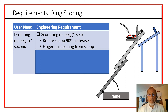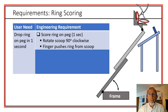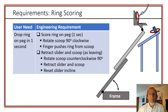Then we need to retract the slider and scoop to get it ready for the next attempt at collecting rings. We rotate the scoop counterclockwise, retract the slider and scoop, and reset the incline of the slider. No time is allocated for this because it can be accomplished as the robot is moving across the field to collect the next ring. Note that we had one second to accomplish all of this — we've allocated the time and identified the actions required.